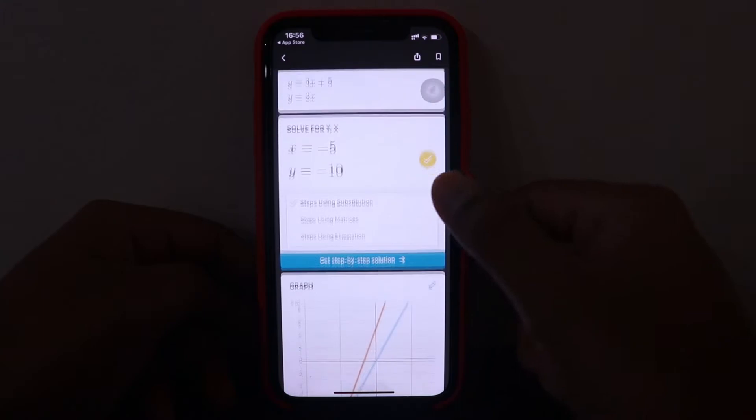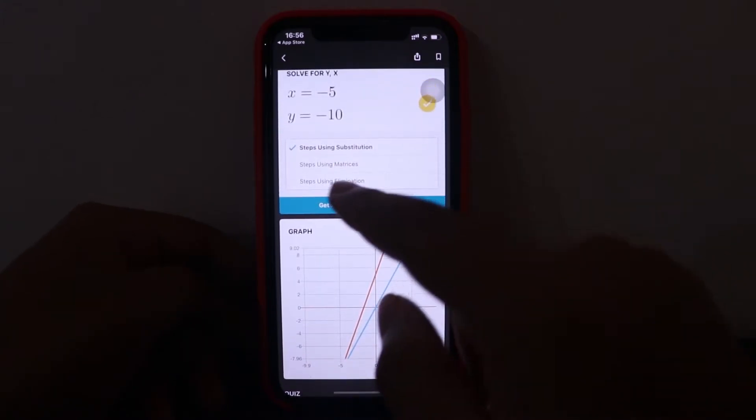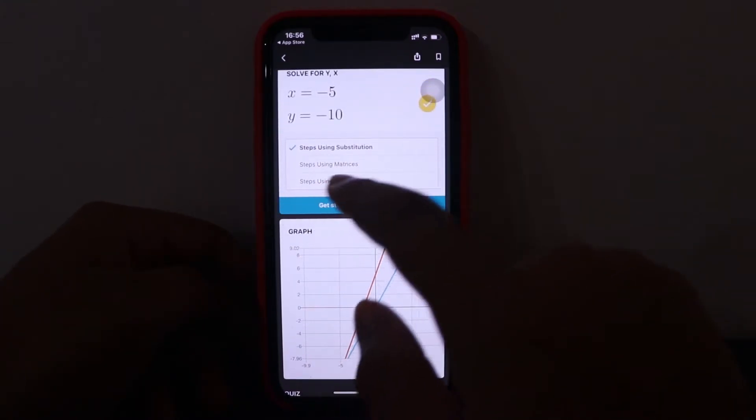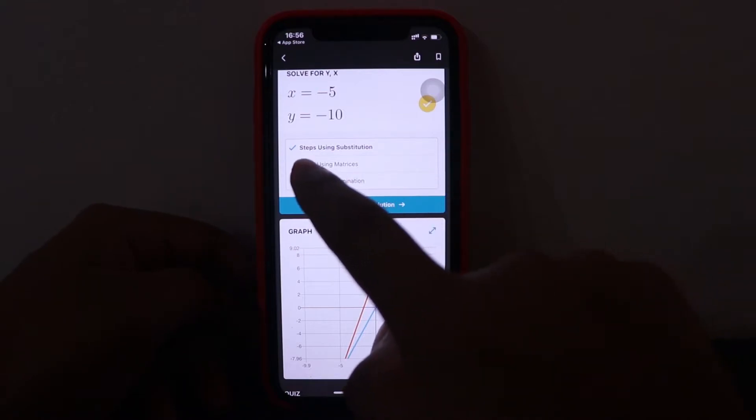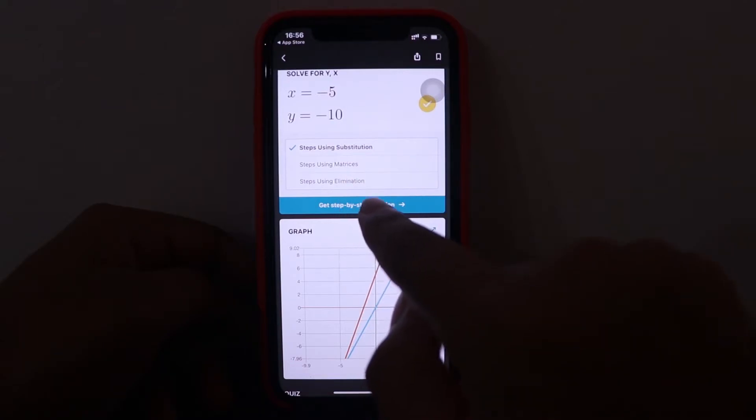So it has options like it has used three different solutions, three different methods to get the solution. So steps using substitution, steps using matrices, and steps using elimination. So you can go to step by step solution.